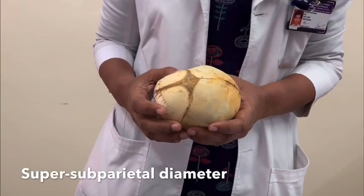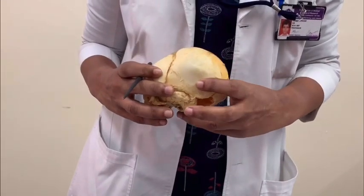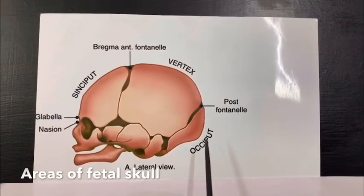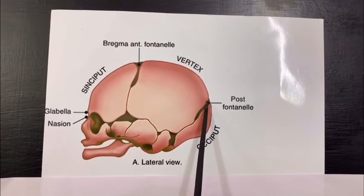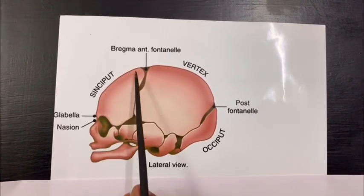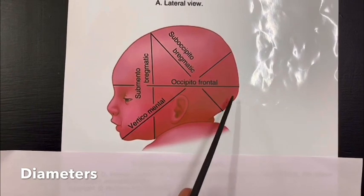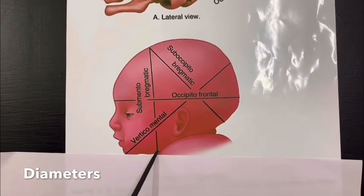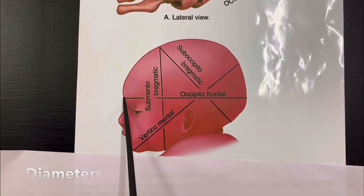Another diameter on the fetal skull is the supero-subparietal diameter: on one side it is below the parietal eminence and on the opposite side it is above the parietal eminence, measuring 8.5 cm. To summarize the various diameters: the suboccipitobregmatic for vertex presentation, the submentobregmatic for face presentation, the mentovertical for brow presentation, and the occipitofrontal diameter for the deflexed head.